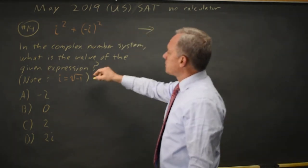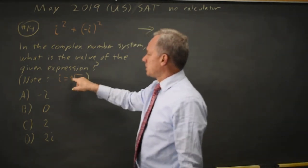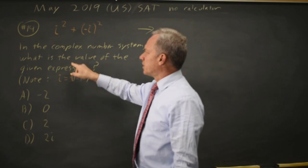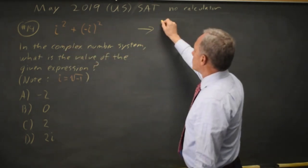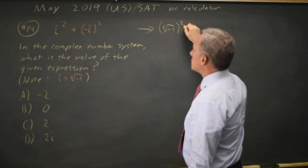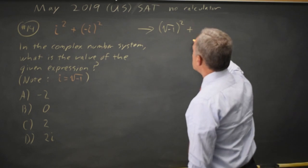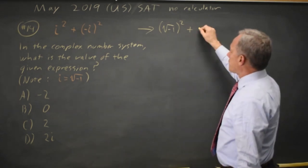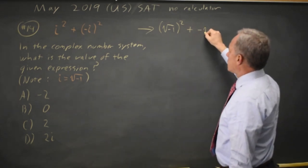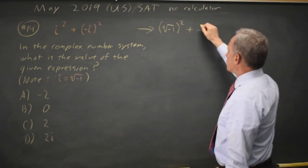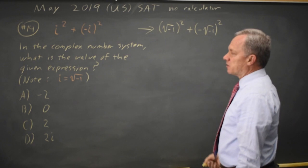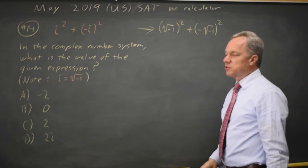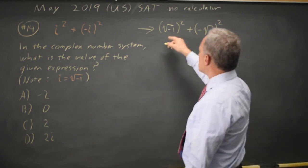They tell us that i is the square root of negative 1. So i squared is the square root of negative 1, squared. And negative i is negative root of negative 1, squared. They're asking us to add those two numbers.